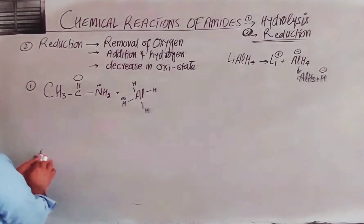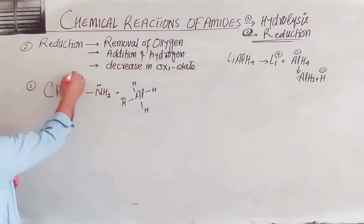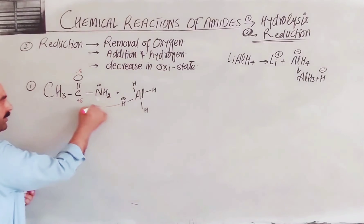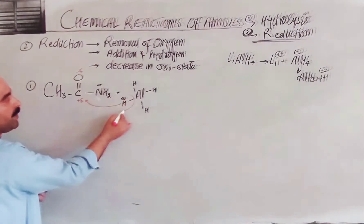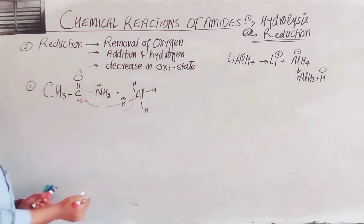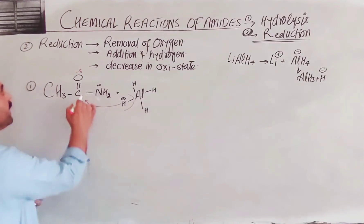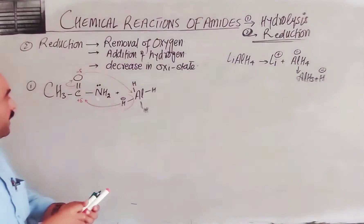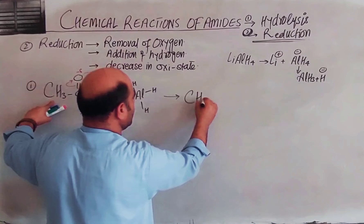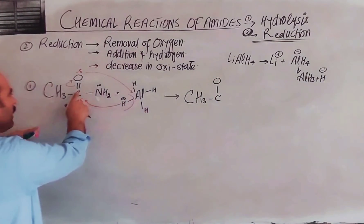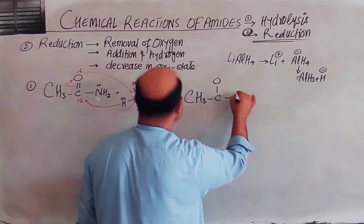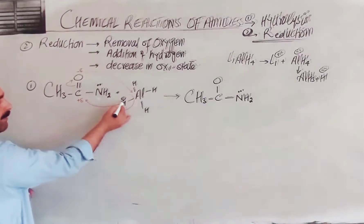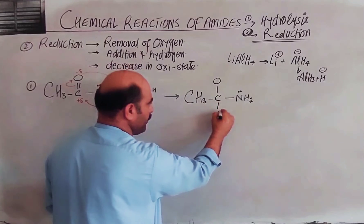In step two, the bond is breaking. With respect to carbon, the C=O bond breaks. The hydride ion attacks on carbon. The carbon now forms a single bond. CH3-C now has a single bond, and this becomes CH2. The hydrogen is derived from the hydride ion, and a new bond is formed in the body of the hydride ion.